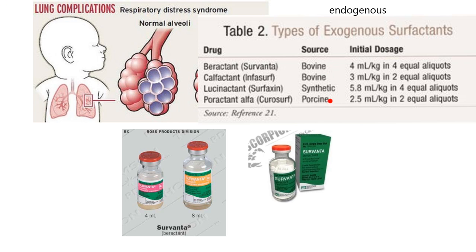Synthetic surfactants are manufactured in a laboratory with no animal products. One other note: premature babies probably have about a tenth of the surfactant they should have, so they are significantly deficient. It's a little controversial — not everyone is a pure believer in administering surfactant down the trachea, as it takes a lot of skill that not everyone has.